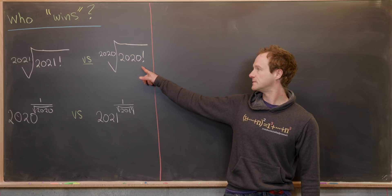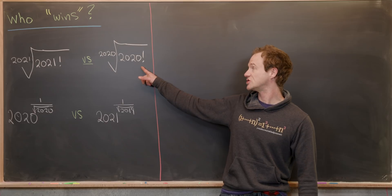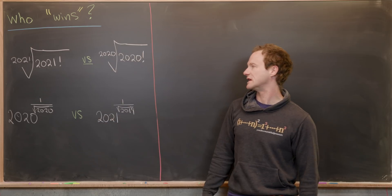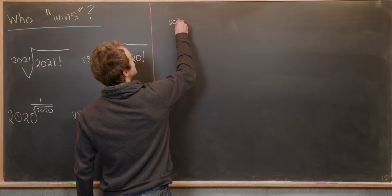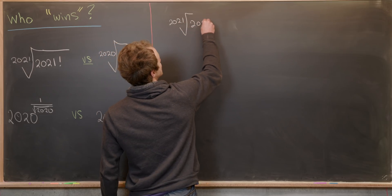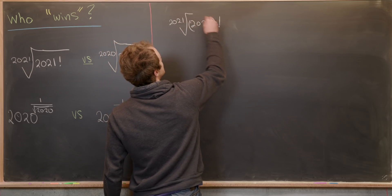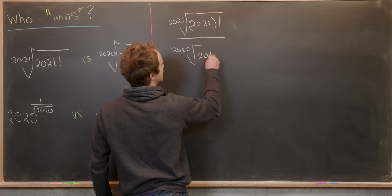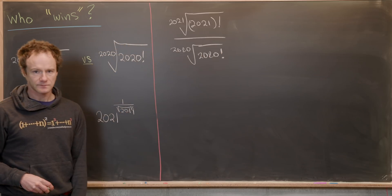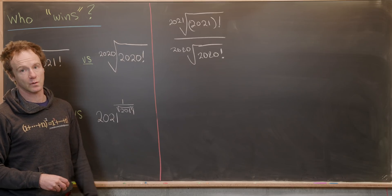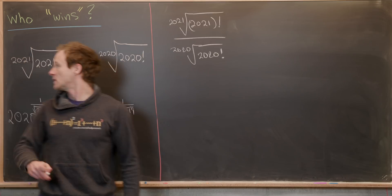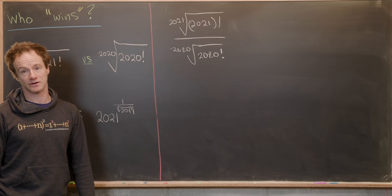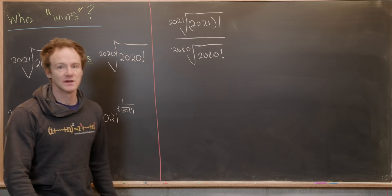Let's look at the first question by taking a ratio of the two objects. We'll put the 2021st root of 2021 factorial in the numerator and divide by the 2020th root of 2020 factorial. If we can show this ratio is larger than one, the numerator wins; if it's smaller than one, the denominator wins.